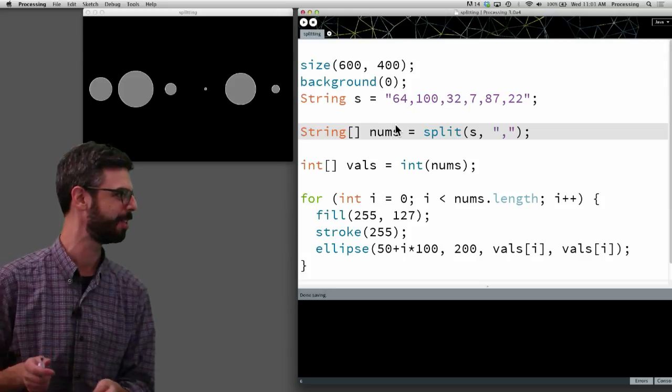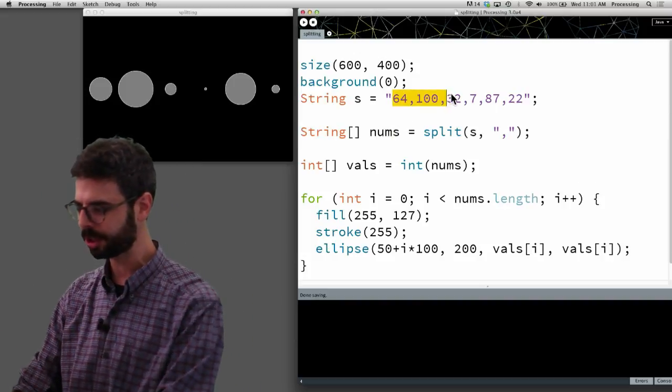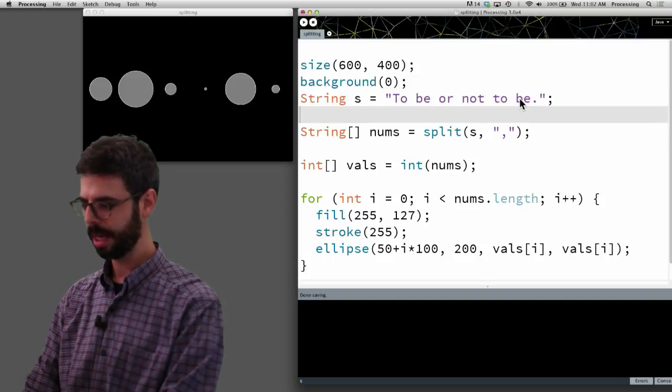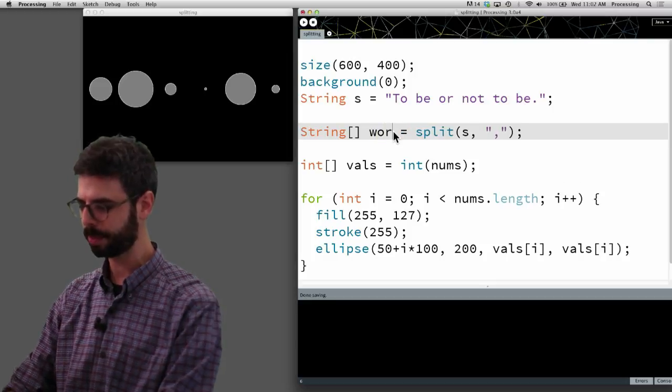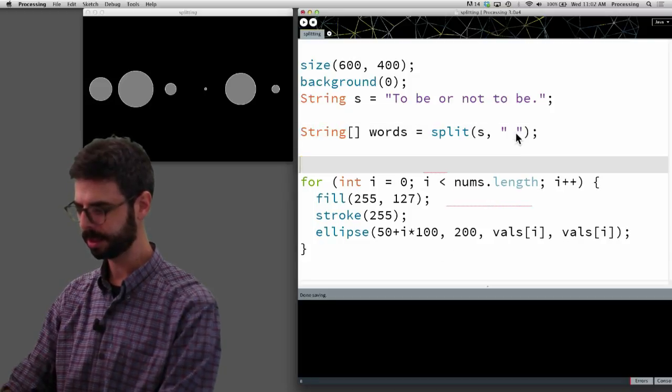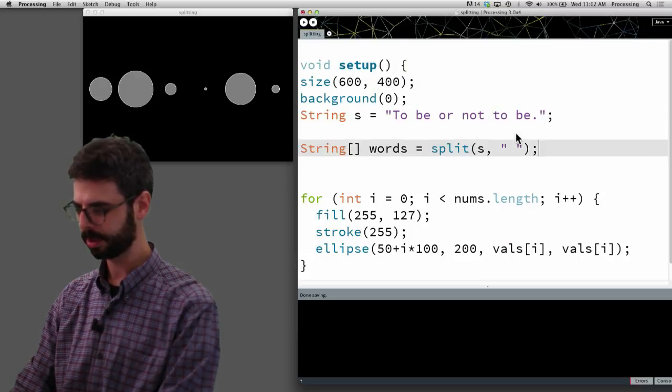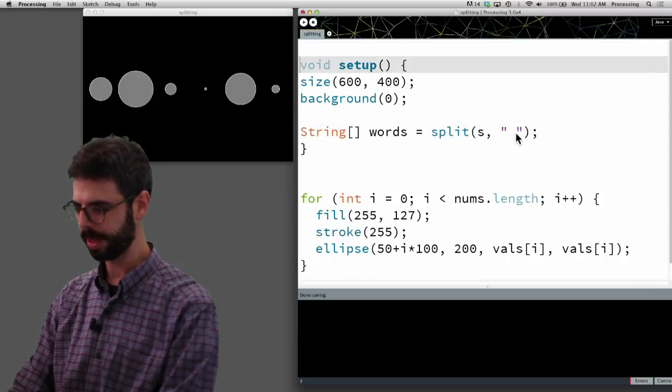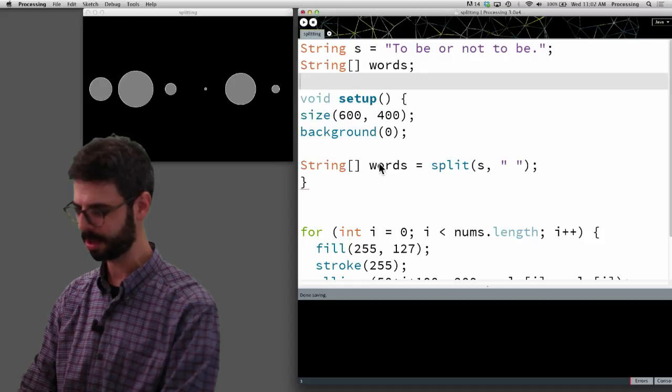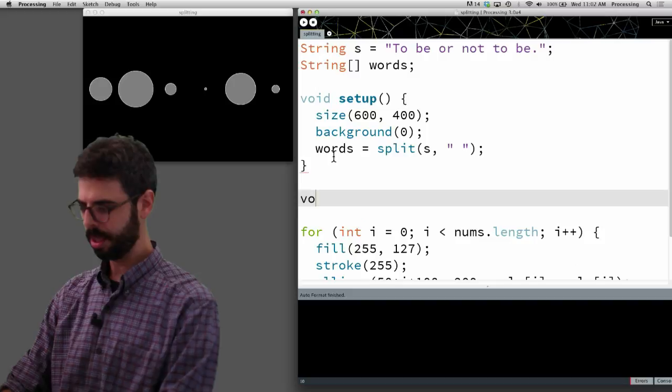Okay, I think I'm trying to convince myself that this makes sense. So let's look at actually doing that. So let's just start with this scenario. In this particular example, I'm going to revise it and say 'to be or not to be'. And then what I'm going to do is say split that string, not by a comma, but by a space. And let's give myself a setup and a draw. And let's make this a global variable. Make words a global variable, split it in setup.